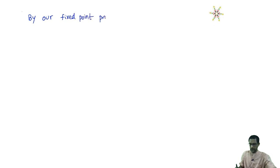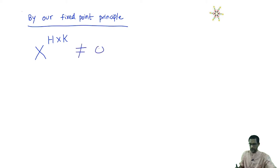We have all the right ingredients. By our fixed point principle from one of the earlier videos, what we obtain is that the H cross K action on X must have a fixed point. The set X^(H cross K) of H cross K fixed points in X is non-empty.